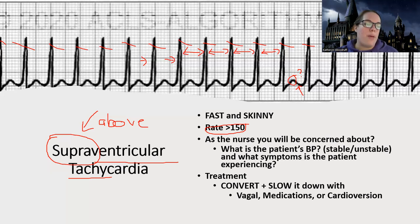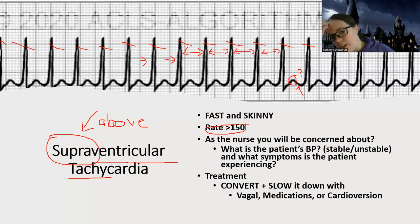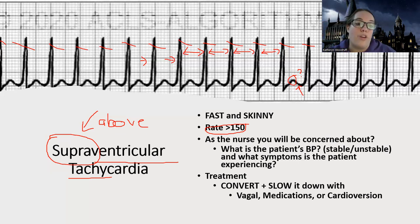To sum up SVT: it's a fast, skinny, regular rhythm. The rate is usually greater than 150 and can get up to over 200. I want to check their stability, then coach them through a vagal maneuver, or give medications, or if they're unstable, do cardioversion. That's all I want to say about SVT.